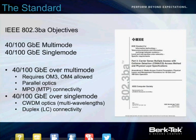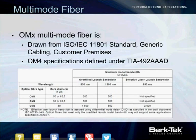Here are the parameters. On the multimode side, notice the third bullet point: MPO — otherwise known as MTP — connectivity and parallel optics. The multimode portion uses multiple fibers each way, each at 10 gigabit. Single mode is CWDM, coarse wavelength division multiplexing — multiple wavelengths over a single fiber. Single mode typically uses LC or SC connectivity, whereas multimode uses the MPO connector. You always hear about OM1, OM2, OM3 — if you're writing a spec and don't know where it comes from, here it is.